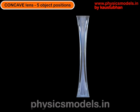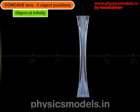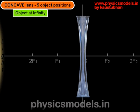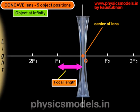So now we do the same thing. We draw the principal axis, mark out F1 and 2F1 on the left-hand side, F2 and 2F2 on the right-hand side. We plug in a light source so that the light rays will always travel from left towards the right.